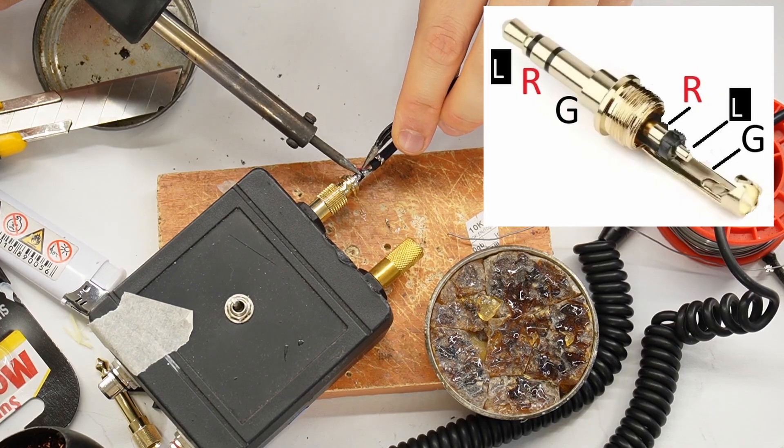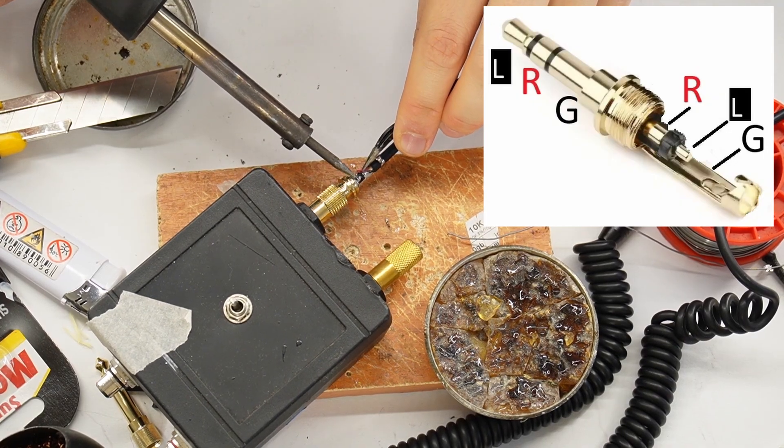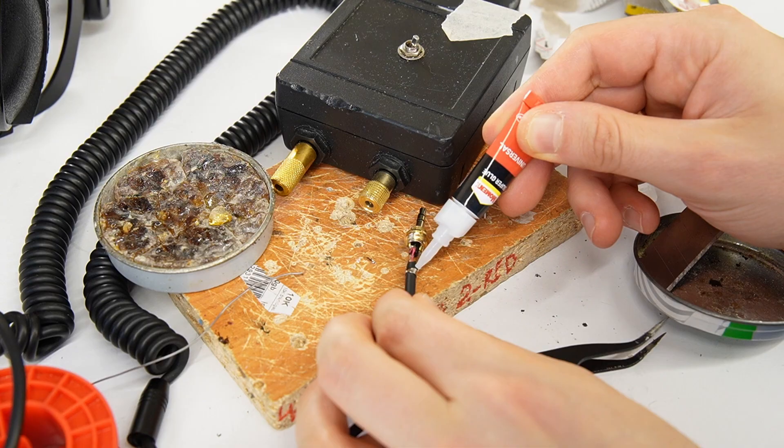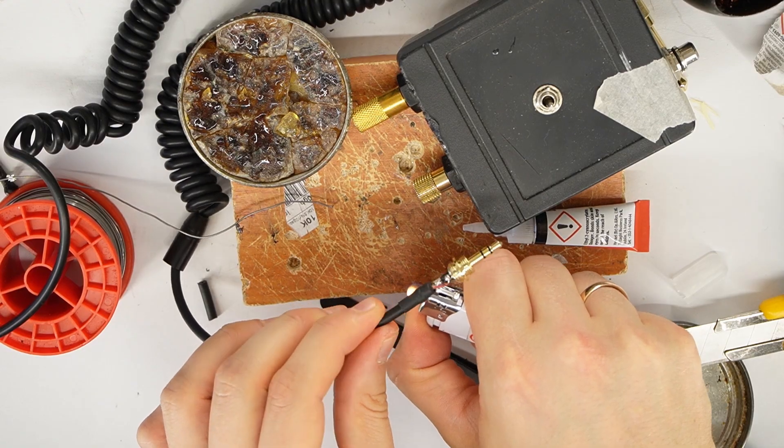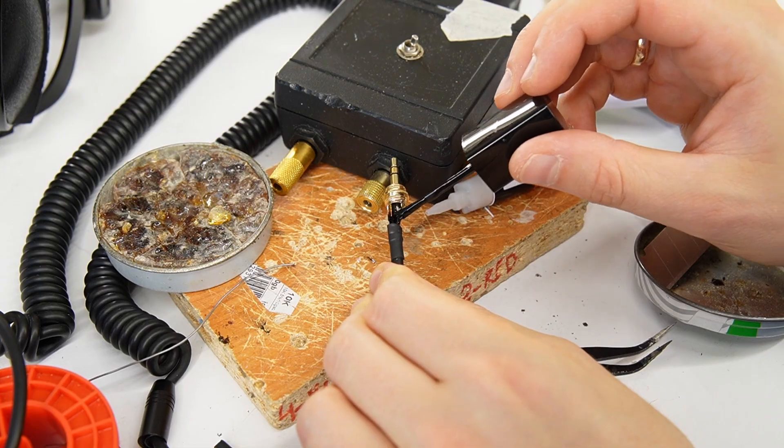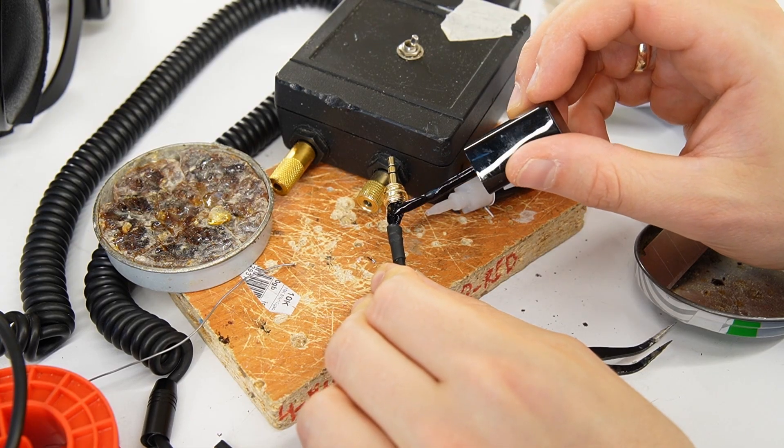Solder the red wire to the right contact and the white wire to the left contact. Apply a little superglue where the cable is fixed to the jack and slide the heat shrink tubing over it. Take grandpa's nail polish and coat the soldered contacts. This helps prevent short circuits.